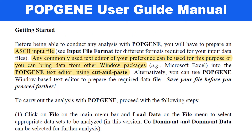For getting started, Popgene accepts the ASCII input file format. If you have Excel or another text editor, you can easily create an ASCII input file, or you can use Popgene's built-in text editor. Just copy and paste data from Excel into the Popgene text editor and save your data sheet with a specific ID such as dominant, co-dominant, diploid, or haploid. Then click on the File main menu bar, load your data file, and select the appropriate data type you want to analyze.